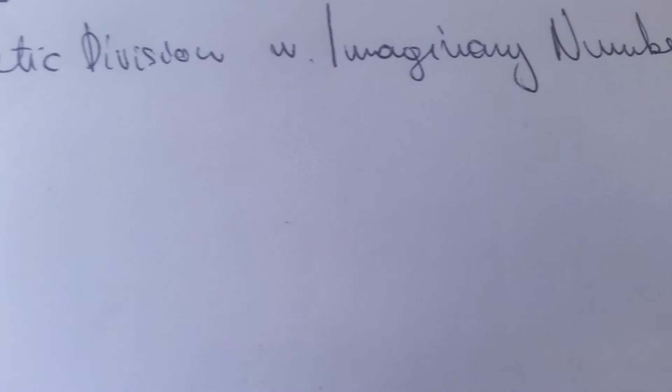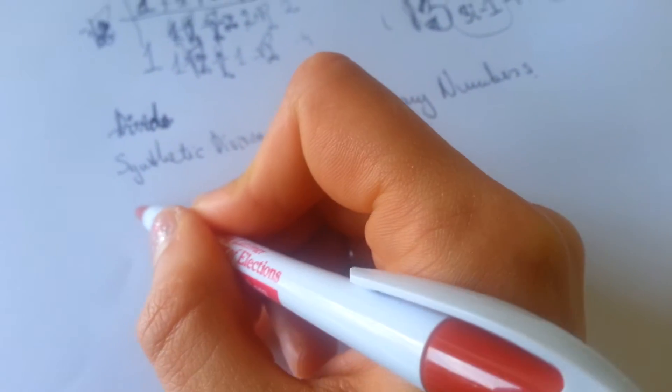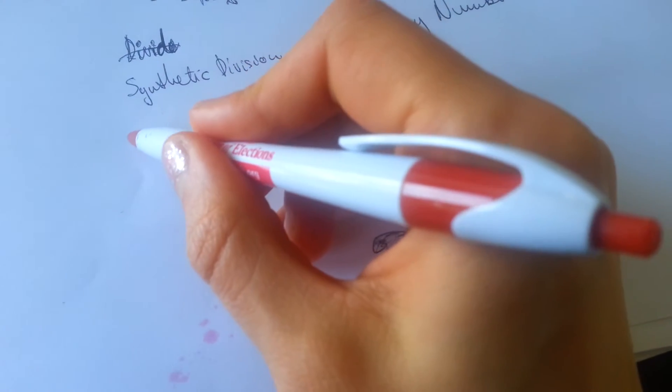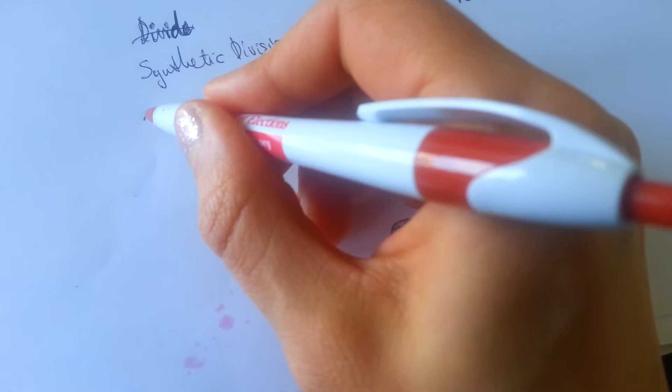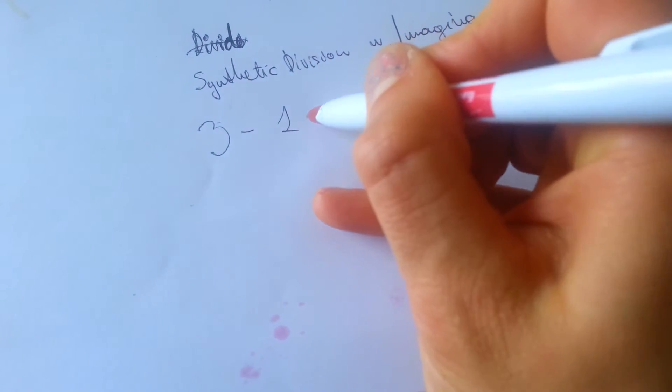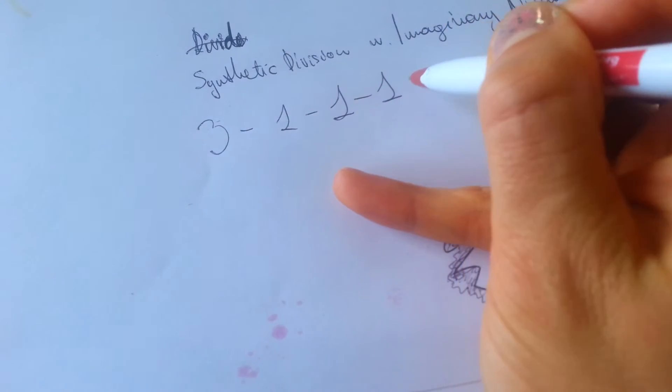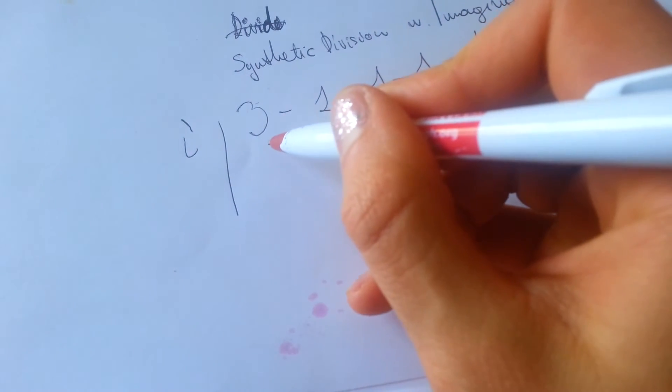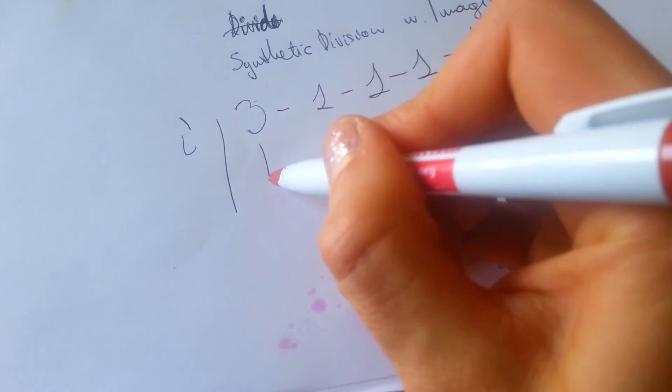Synthetic division with imaginary numbers. What we're going to do right now is our problem: 3 minus 1 minus 1 minus 1 minus 4, and we need to divide this with i.